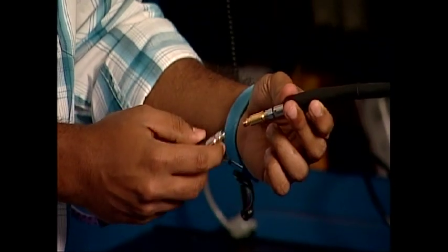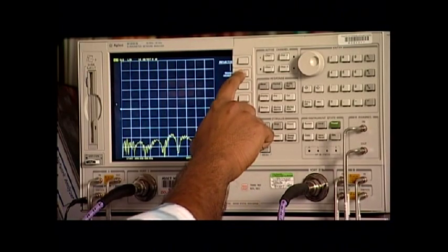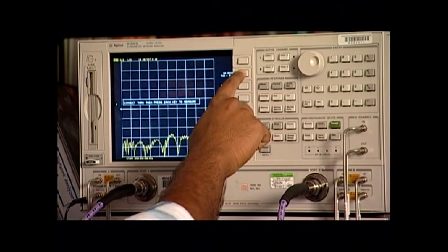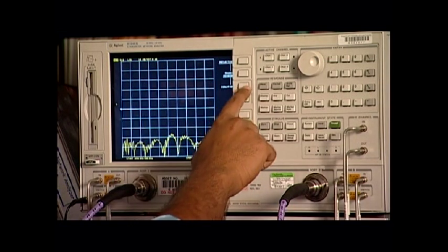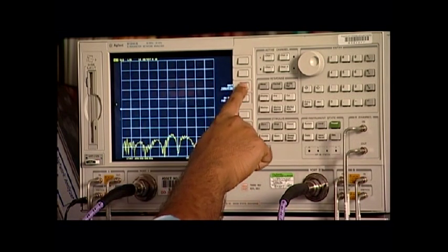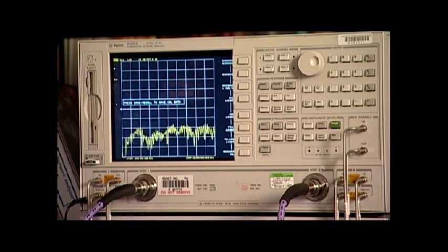For the transmission measurements, we connect the through between the ports 1 and 2. We then select transmission, do both forward and reverse. Since we're omitting the isolation part, we select isolation, omit isolation, done 2 port calibration.